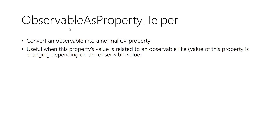Why use this instead of a simple C# property? First of all, it has a very easy syntax. Number two, it's a proof that the value of this property is only set when there is any change to the username or password. The third benefit is you don't need to take care about calling RaiseAndSetIfChanged or implement INotifyPropertyChanged on this read-only property, because Observable as Property Helper takes care of this.